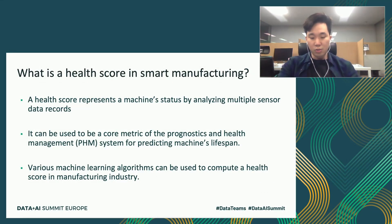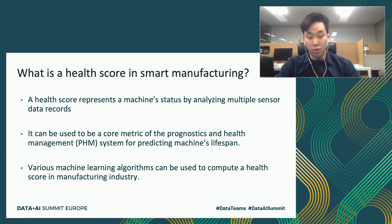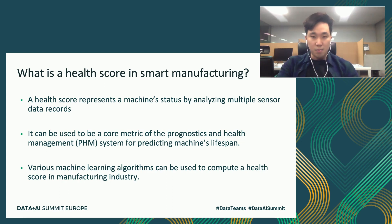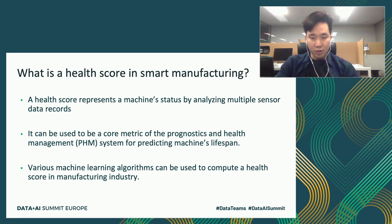What is the health score in smart manufacturing? A health score, also known as an assess score, represents a machine's status as a single value. It is a core metric of the prognostics and health management system, because a health score can be used to predict the machine's failure time. To compute the health score, various machine learning algorithms are used, and selecting appropriate algorithms is important for accurate health scoring.